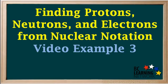In this example, you'll be shown how to find the number of protons, neutrons, and electrons given the nuclear notation of a negative ion.